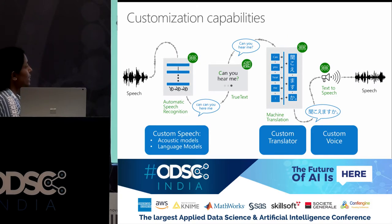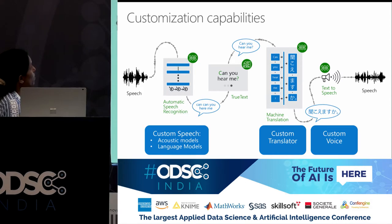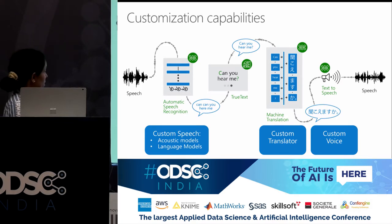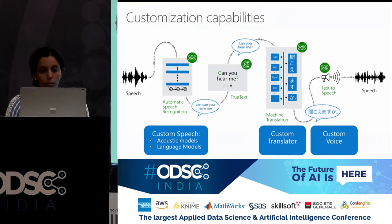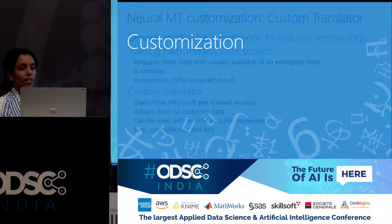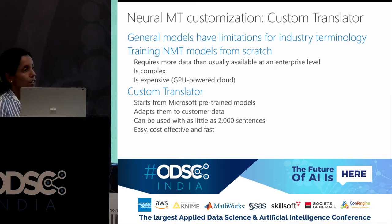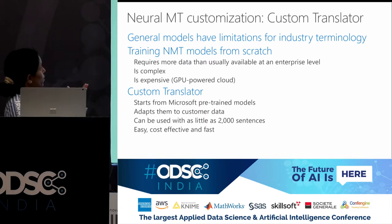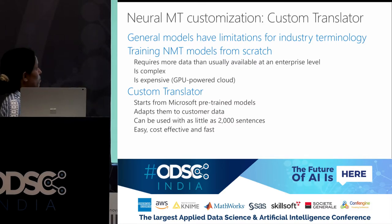Many times I don't want to use the API as-is because it does not fit the industry context I'm trying to address. That's where customization comes in — we have support for custom speech, custom translator, and custom voice. If we have our own data, we can bring it in and build over the pre-trained models, so we don't have to do all the heavy lifting of building a model from scratch. If you're looking at specific IT-related terminology, a general model doesn't have all of that. Training a model from scratch is complex and expensive, which is why we recommend using custom translator.